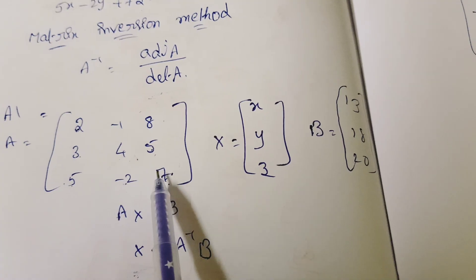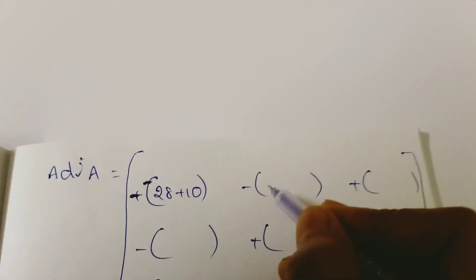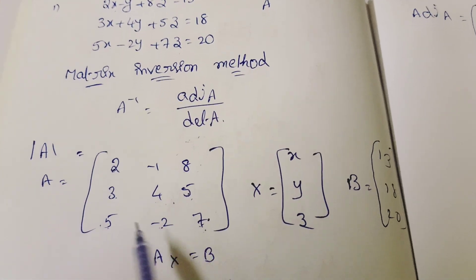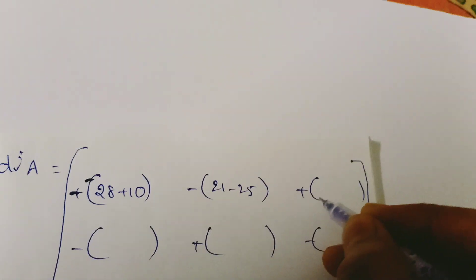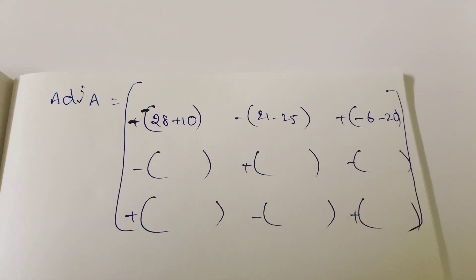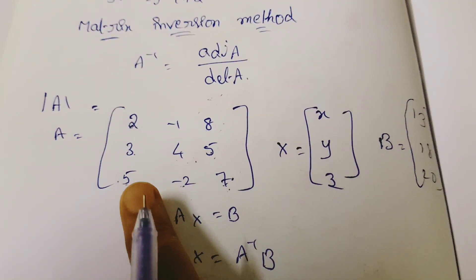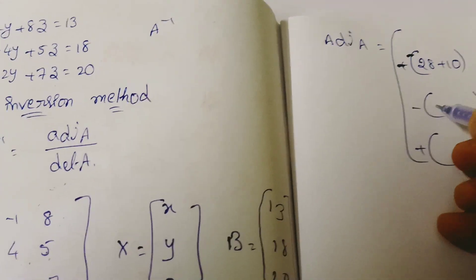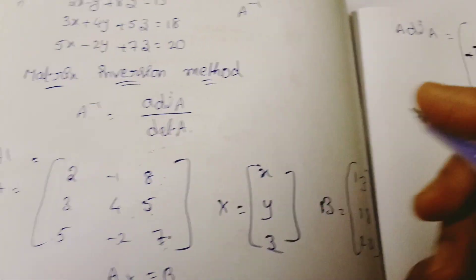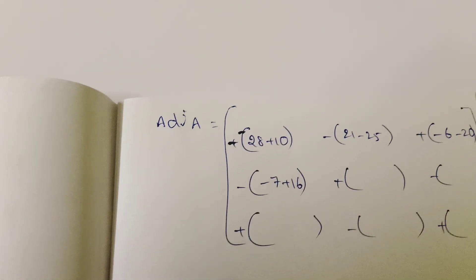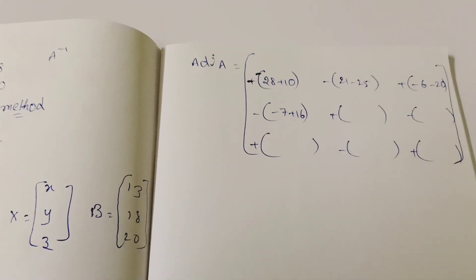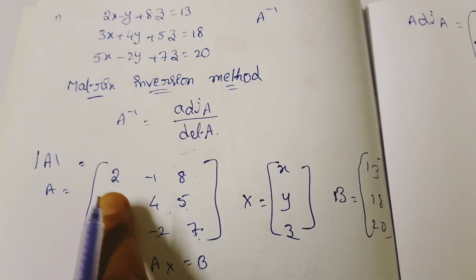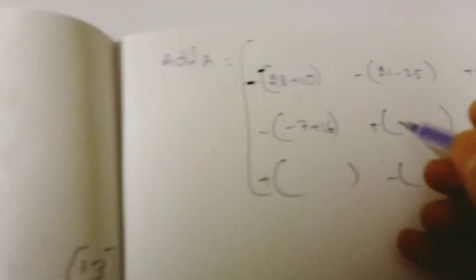Calculating cofactors: C11 — row 1 column 1 closes, 4×7 minus 5×(minus2) = 28 plus 10 = 38. C12 — row 1 column 2 closes, minus(3×7 minus 5×5) = minus(21 minus 25) = plus 4. C13 — row 1 column 3 closes, 3×(minus2) minus 4×5 = minus6 minus 20 = minus 26.